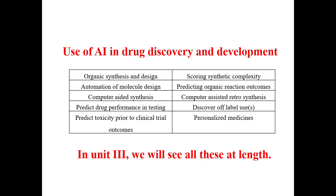This is the last section of unit one. The uses of AI in drug discovery will be seen in chapter three. In chapter two, we will see the basics of AI and related terminologies. Applications of AI in drug discovery include organic synthesis and design, scoring synthetic complexity, automation of molecule design, predicting organic reaction outcomes, computer-aided synthesis, computer-assisted retrosynthesis, predicting drug performance in testing, and discovering off-label uses — that is, drug repurposing. One of the most important uses of AI is repurposing: analyzing unexpected indications of a drug molecule. A recent example is the recommended use of chloroquine, hydroxychloroquine, and azithromycin for treating or alleviating symptoms of coronavirus, as per WHO and ICMR India.